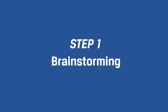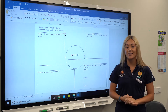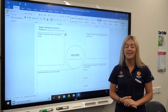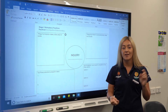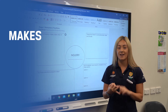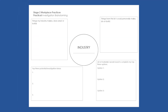Step one is to brainstorm. This step requires you to brainstorm a list of ideas about all the things a person in your industry makes, does or uses. You should use the brainstorming resource, which you can find on Canvas, to help you successfully brainstorm these ideas.